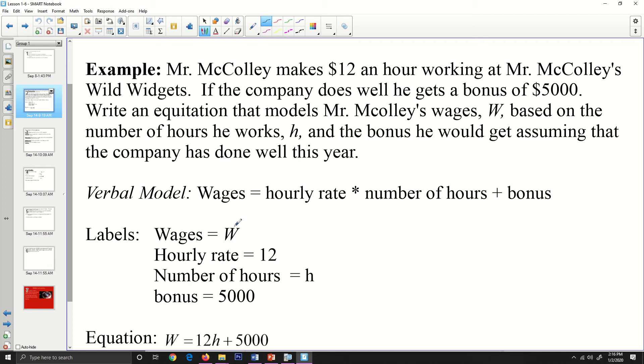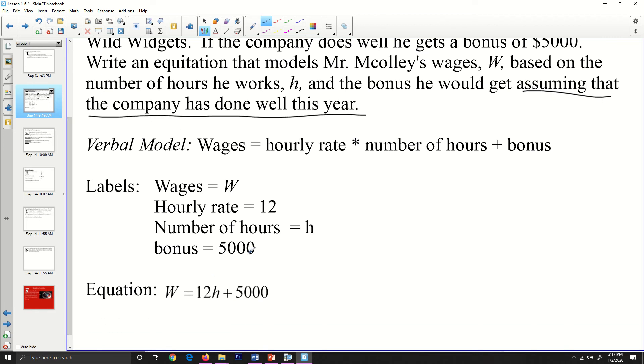I want to make my wages W. I want to make my hourly rate 12, and I got that from this value right here. My number of hours I don't know is h, and then we are assuming that the company has done well, and of course Mr. McCulley's Wild Widgets always does well. I get my bonus of $5,000. So my equation here, W equals 12h plus $5,000. I just take the number of hours that I worked, whether it is weekly or yearly, just a total amount for that particular instance, multiplied by 12, add $5,000. That's my yearly wages.